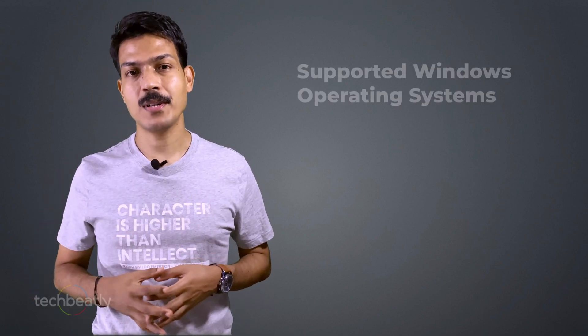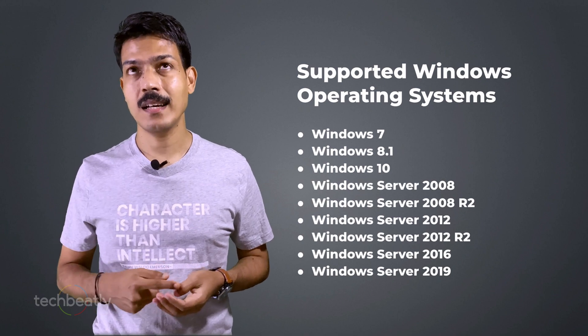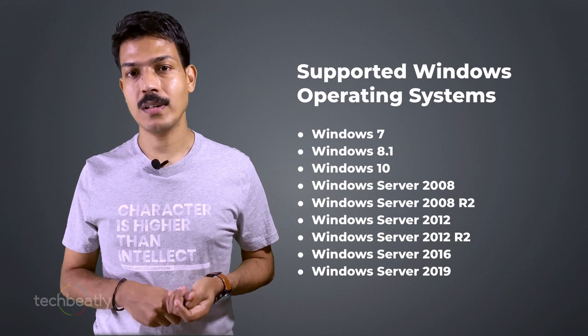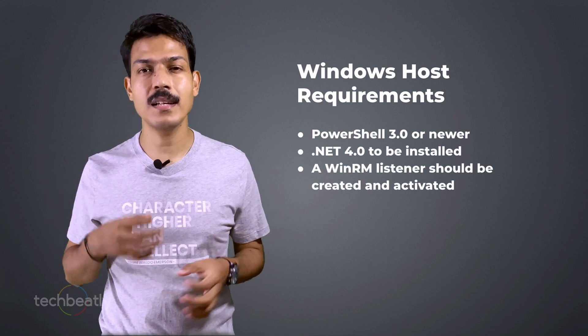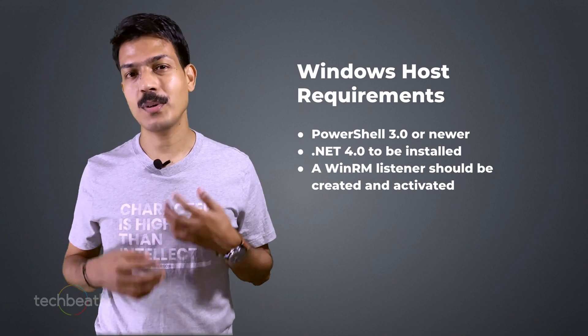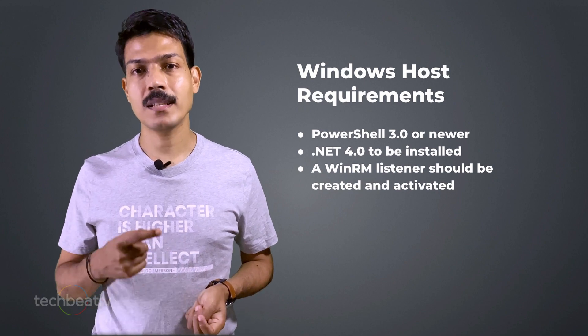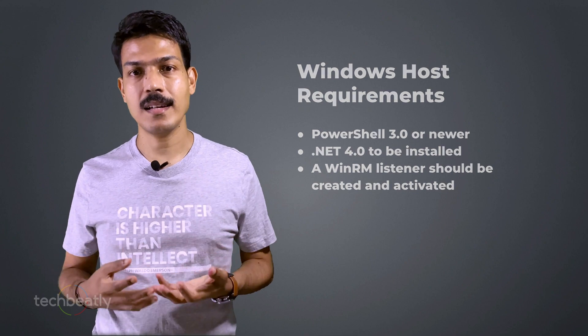For Windows, you need to configure some steps on your Windows machine as well, so that Ansible can talk to your Windows machine and execute automated tasks. What are the supported Windows operating systems? Ansible will support most Windows OS versions like Windows 7, 8.1, 10, Windows Server 2008, 2008 R2, 2012, 2012 R2, 2016, and 2019. Your Windows machine should meet requirements such as PowerShell 3.0 or newer, .NET 4.0 or newer, and a WinRM listener should be created and activated.